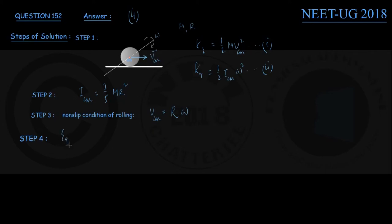From equation number 2, we can write that rotational kinetic energy KR equals half times ICM, which is 2/5 MR squared, and omega is...